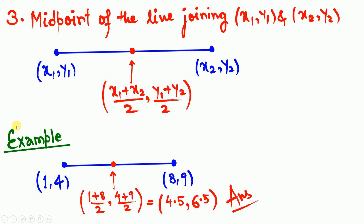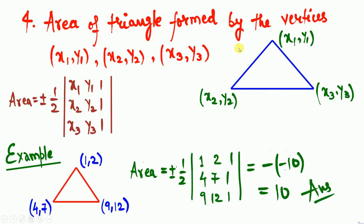For example, a straight line has two points (1, 4) and (8, 9). The midpoint is calculated as (1+8)/2, (4+9)/2, which gives 4.5 comma 6.5. So (4.5, 6.5) is the midpoint of that line.